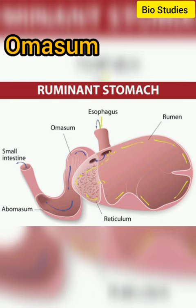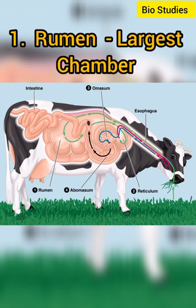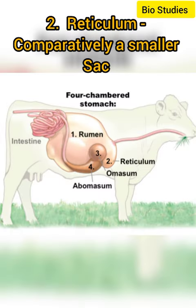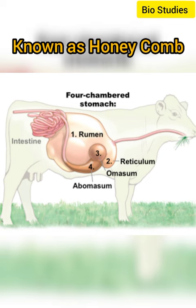First is the rumen. It is the largest chamber and receives the esophagus close to its opening in the reticulum. Next is the reticulum. It is a comparatively smaller sack and has a network of ridges on its inner surface, so it is